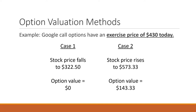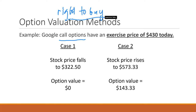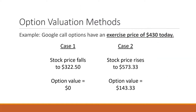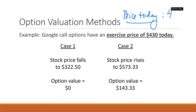Let's have an example here — a Google call option. Note that Google is no longer traded as such; it's the company Alphabet that's trading now, so this example is a little dated, but it will serve our purpose. You own Google call options. Because it is a call option, it gives you the right to buy an asset at a specific price. The exercise price is $430. Let us assume further that the price today of Google stock is also $430 per share.